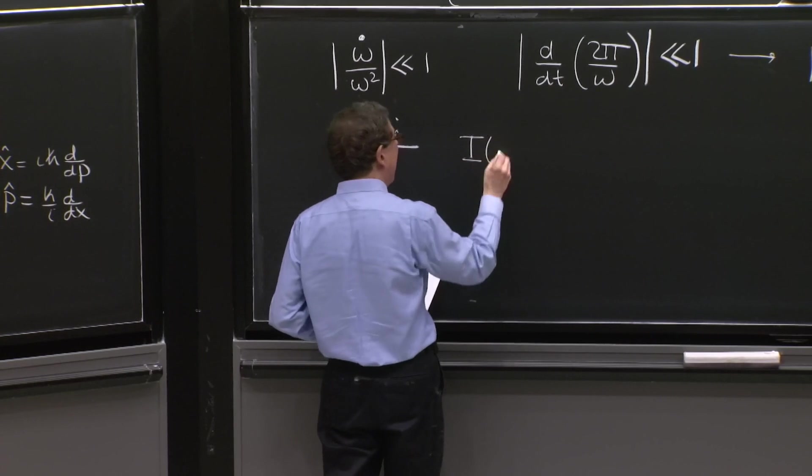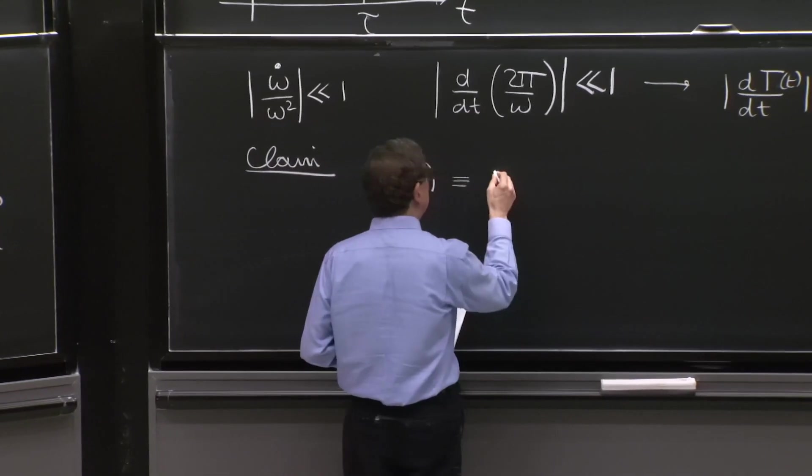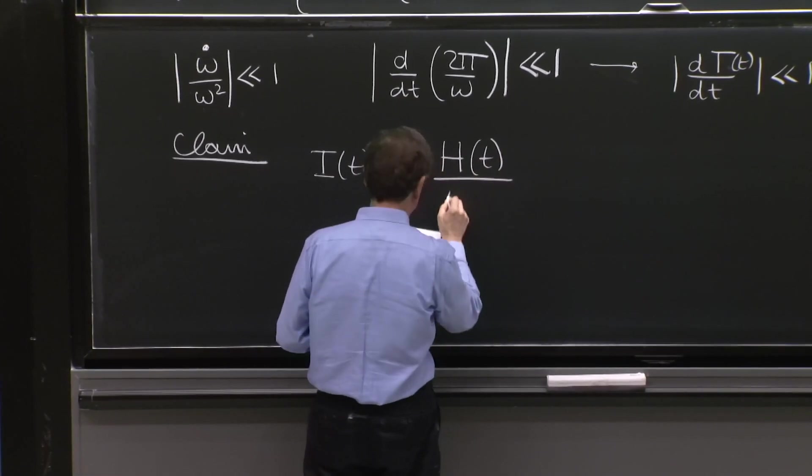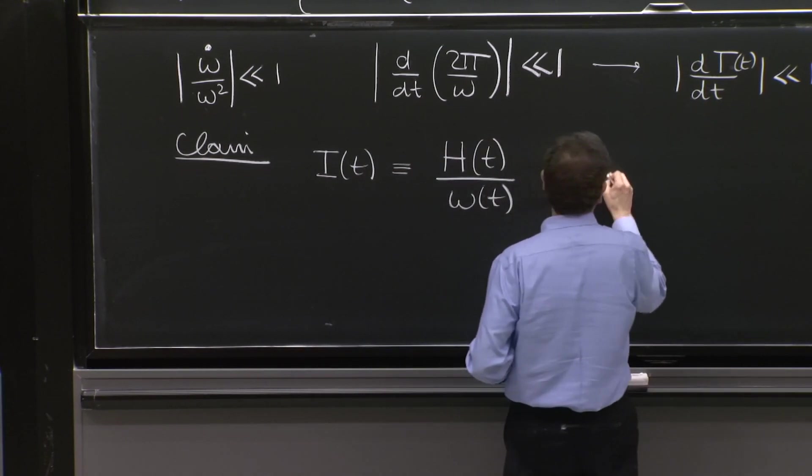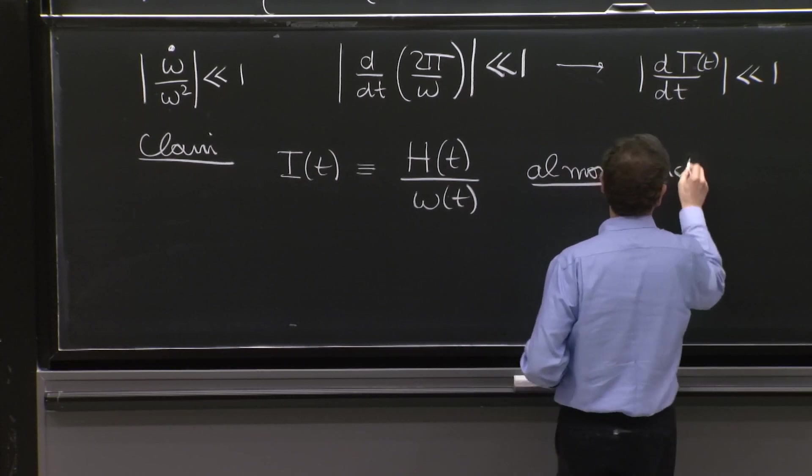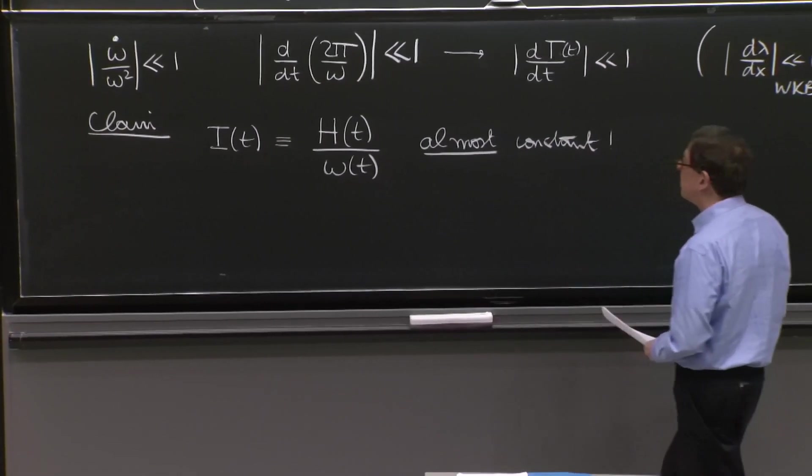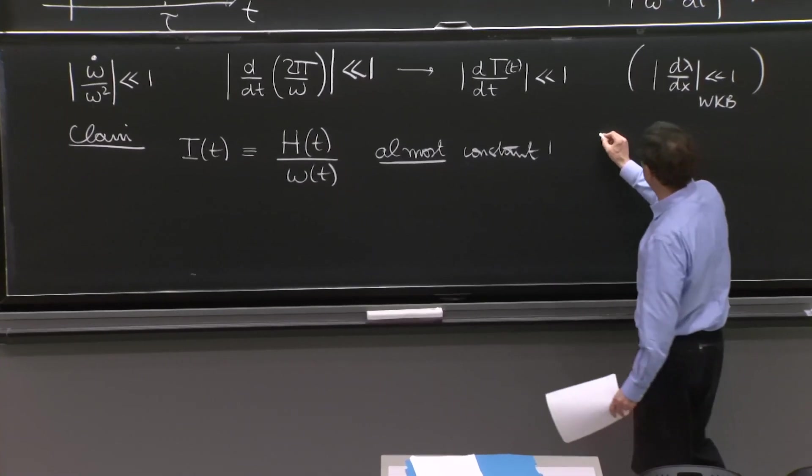So here is the claim. There is an I of t called adiabatic invariant, which is basically h of t divided by omega of t. And it's almost constant. And this quantity has the units of energy times time.